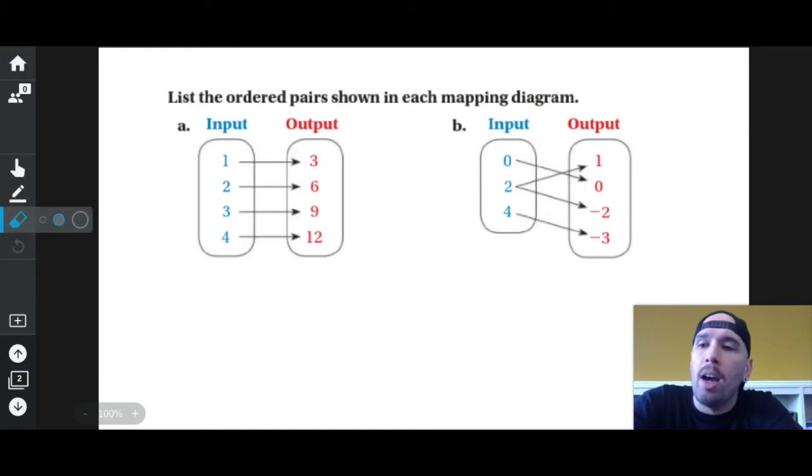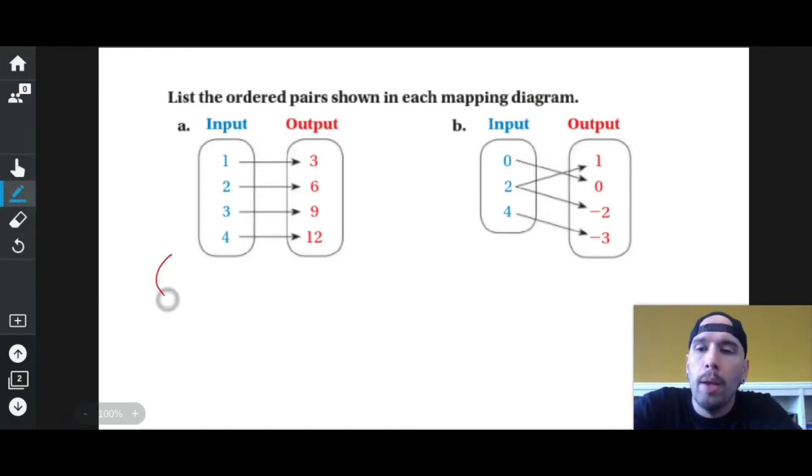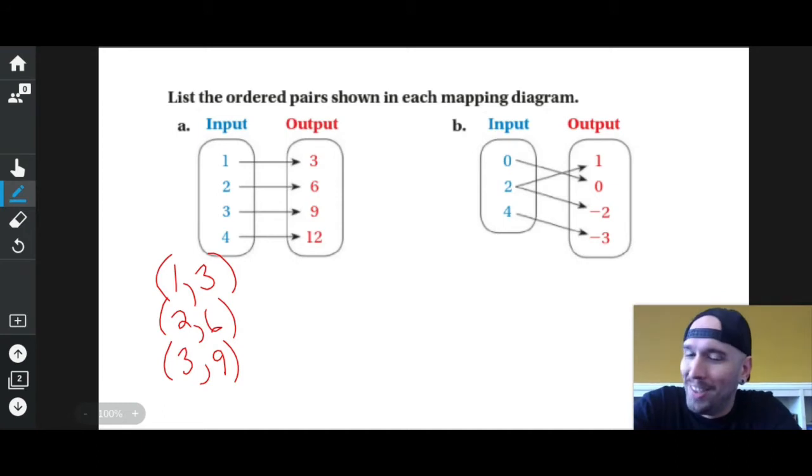So in this case I have one going to three, which means I have the point (1, 3). I have two going to six, which means I have the point (2, 6). I have three going to nine, which means I have the point (3, 9). And I have four going to twelve, which means I have the point (4, 12).